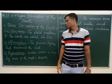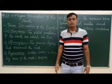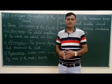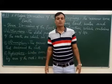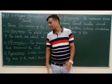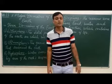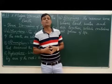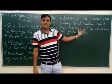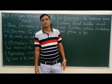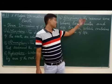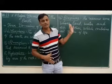Next, hydrosphere. Water covers a very big area of the Earth's surface. This area is known as hydrosphere. And the fourth one, biosphere. Biosphere is the narrow zone where land, water and air together contain all forms of life. That is known as biosphere.